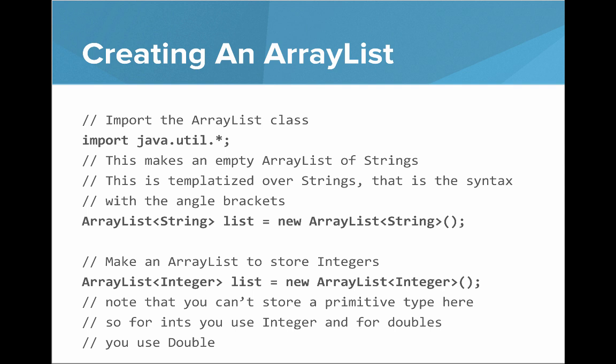Let's say we want to create an empty ArrayList of strings. You'll notice something new, which is that ArrayLists require you to write the type that it's templatized over in between the angle brackets. So if we want to make an ArrayList to store integers, we say ArrayList of Integer, where Integer is the templatized type.